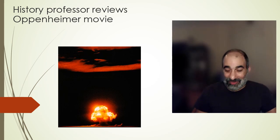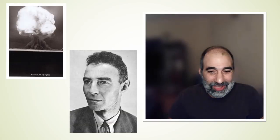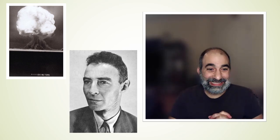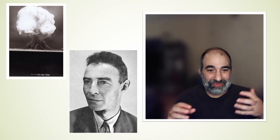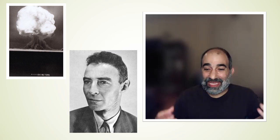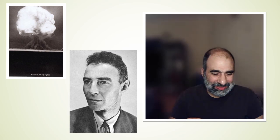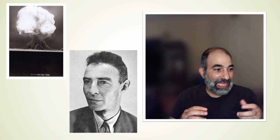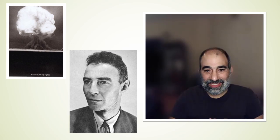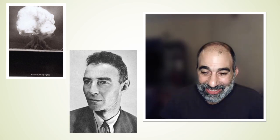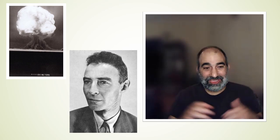So here we go. One thing people are already asking is: did he actually try to poison his tutor? And apparently the answer is yes. Oppenheimer apparently told one of his friends that he didn't like his tutor and he did put some sort of chemical in an apple. It wasn't quite as dramatic as shown in the movie, but he did put something in there. It kind of captures his personality.